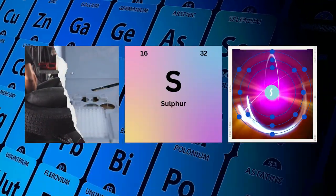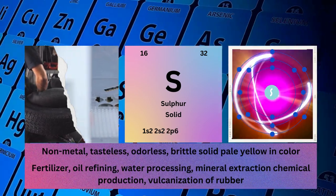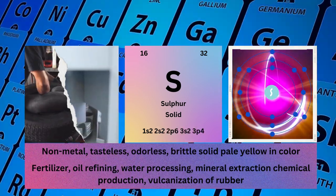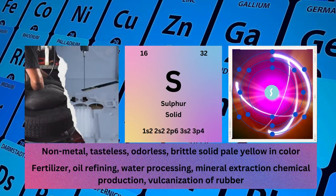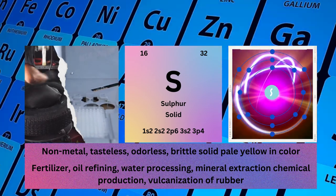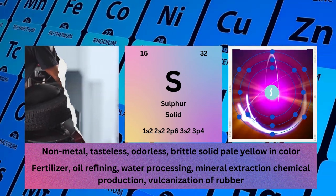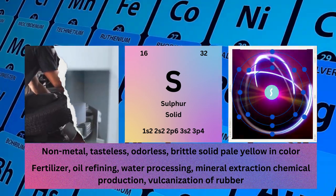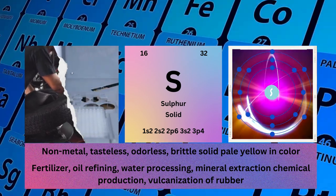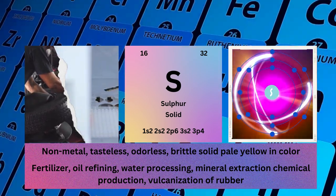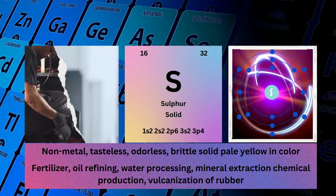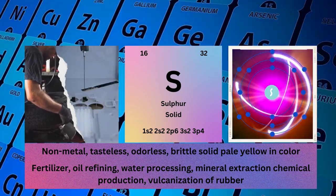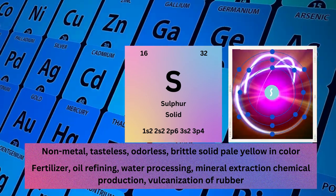Sulfur, atomic number 16, mass number 32, symbol S, state solid, electronic configuration 1s²2s²2p⁶3s²3p⁴. Physical properties: non-metal, tasteless, odorless. Sulfur used in fertilizer, oil refining, water processing, mineral extraction, and chemical production.